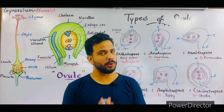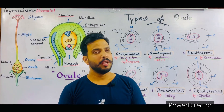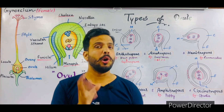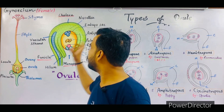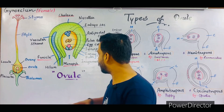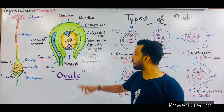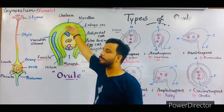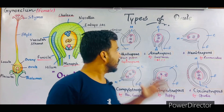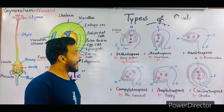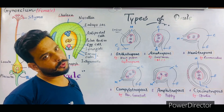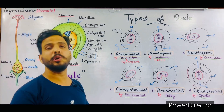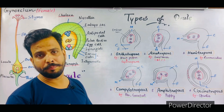The diagram is ready. Now I am going to explain all six types of ovule. These ovules are categorized on the basis of the position of micropyle, chalaza, and funicle — I will repeat these three important names again and again. The six types are: number one, orthotropous; number two, anatropous; number three, hemitropous; number four, campylotropous; number five, amphitropous; and number six, circinotropous.